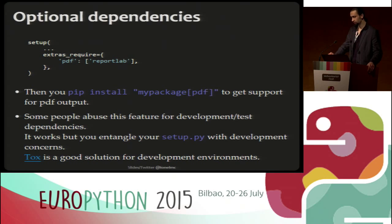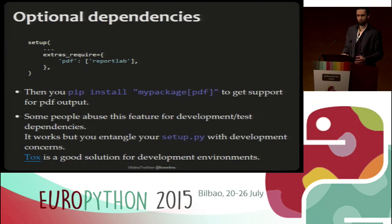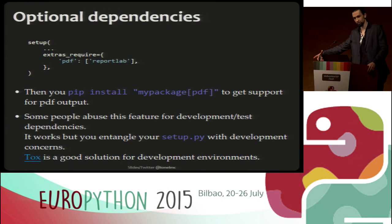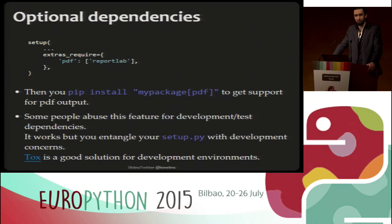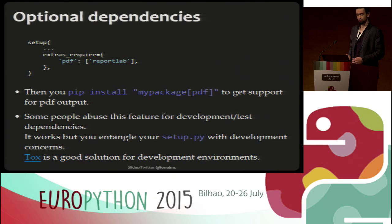There's another feature: extras_require. You can have a big package that uses optional backends and specify those as extras. When you install it you can specify the extras if you want the special thing — for example activating a PDF feature that depends on reportlab. This is a flexible feature that people sometimes abuse for development or test dependencies, sticking test dependencies in an extra. It works, but there are better tools for that — like tox, which can also manage virtualenvs.